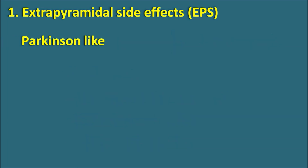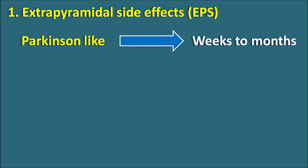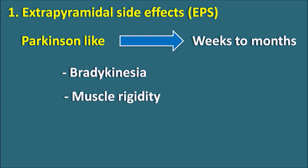The third phase is Parkinson-like symptoms, also called pseudo-parkinsonism, which develop after weeks to months of treatment. Symptoms include bradykinesia, slowing of movements, muscle rigidity, muscle spasms, resting tremor, and a bent posture. These side effects resemble Parkinson's disease and are fortunately reversible upon stopping the drug.